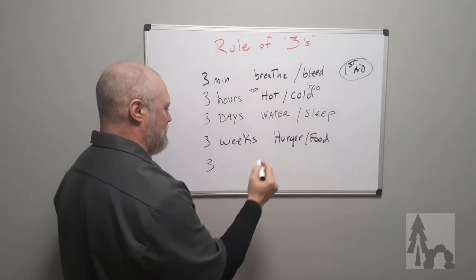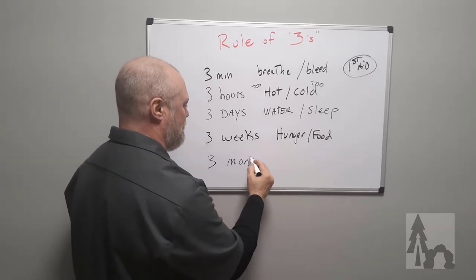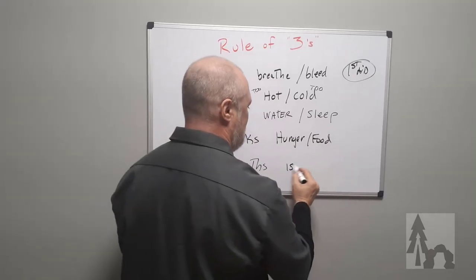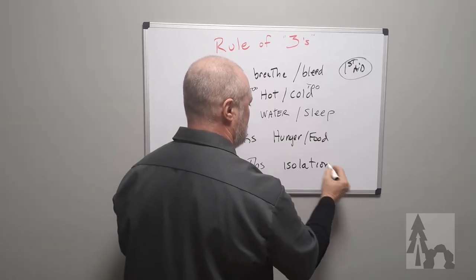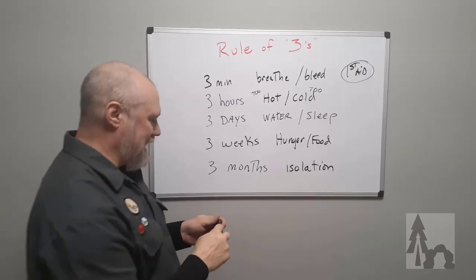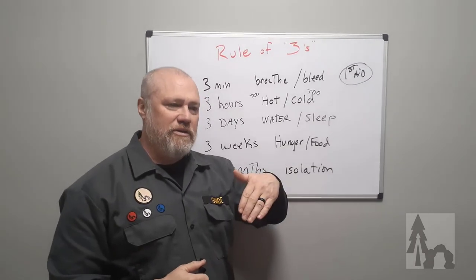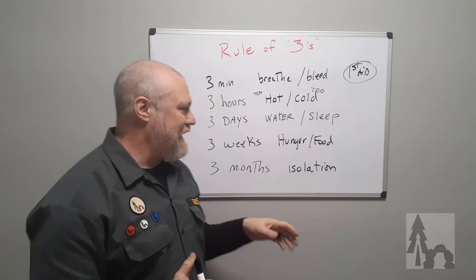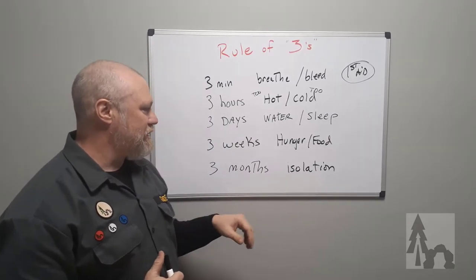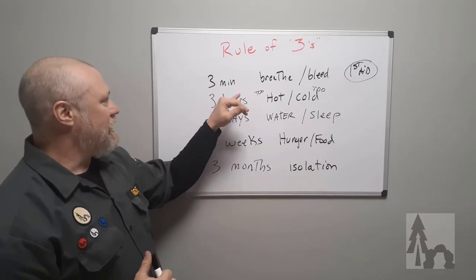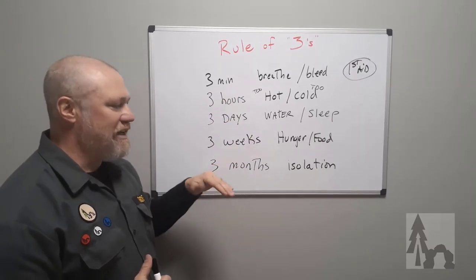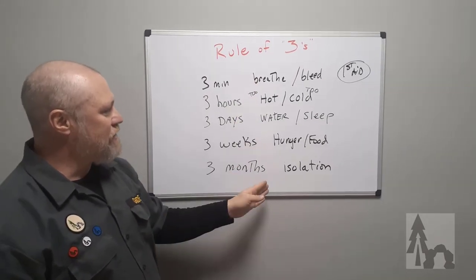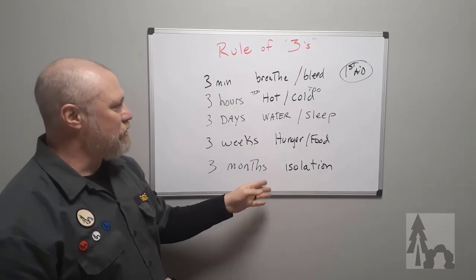Then just for the sake of symmetry, we put three months in our Rule of Threes, and this is going to be isolation. Most people are okay, but three months in isolation without other human contact or interacting with somebody can have a lot of negative consequences. Again, think of these hours, days, months, weeks as limits. It just kind of fits the symmetry of this Rule of Threes and it gives you a nice order with which to address problems or situations that come up when you're out in the woods.